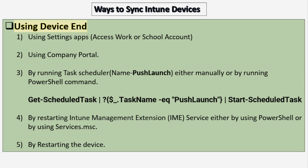We can also initiate a sync from the device end. The first way is to use the Settings app — go to Access work or school account and initiate a sync. The second option is to use the Company Portal app installed on the Windows device. The third way is by running the task scheduler either manually or via PowerShell command — the task scheduler name is 'push launch'. The fourth way is by restarting the Intune Management Extension service using PowerShell or services.msc. The last way is to restart the device.